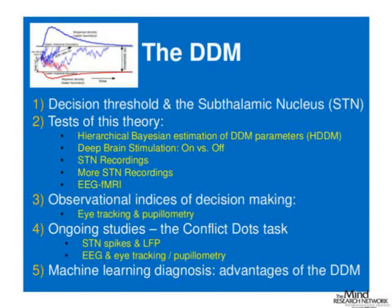This process was predicted by computational modeling of the basal ganglia before a lot of empirical data came out. I'll describe some tests of this theory, including hierarchical Bayesian estimation of DDM parameters using Thomas Wiecki's HDDM toolbox, manipulation of STN states with deep brain stimulation, direct recording of the human STN, and brand new data from an EEG and fMRI combined experiment. I'll also describe related experiments looking at associated parameters like eye tracking and pupilometry, and discuss what we're doing right now both in the lab and with Parkinson's patients in surgery, as well as the advantages of using this modeling approach for patient diagnosis.